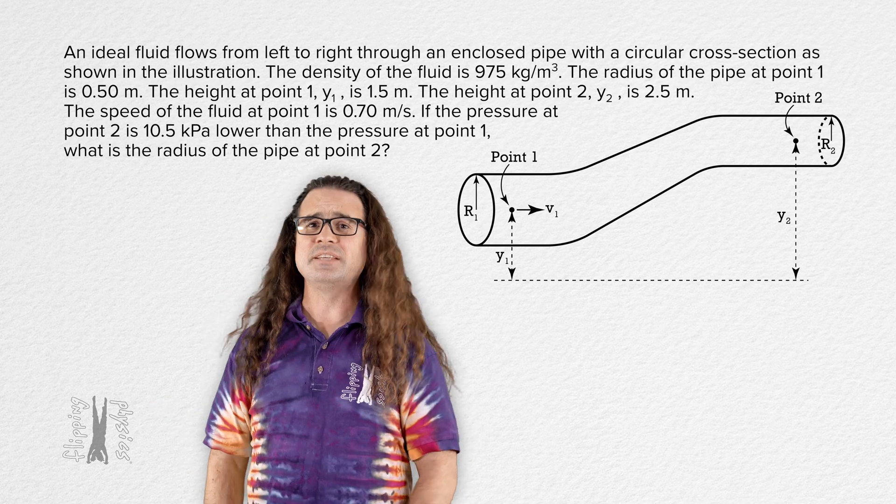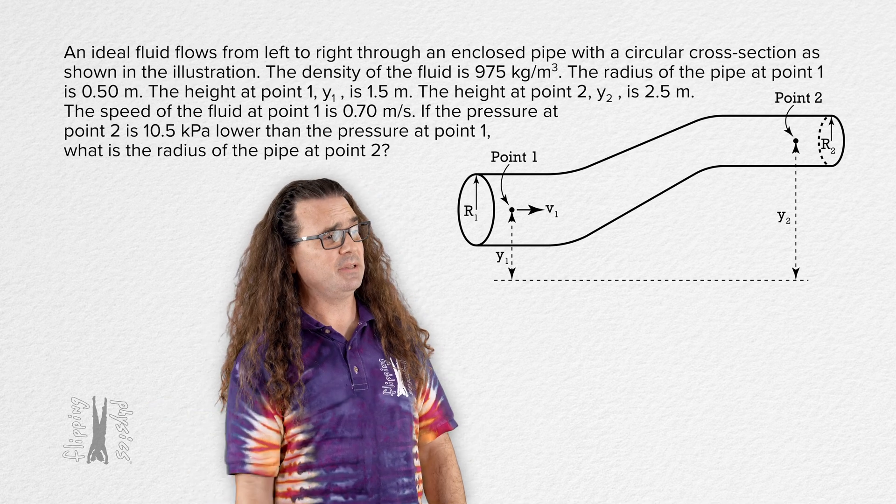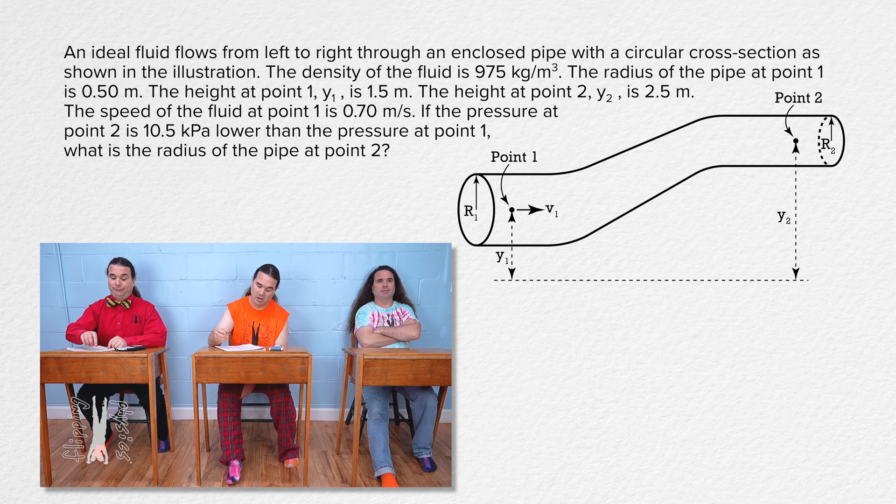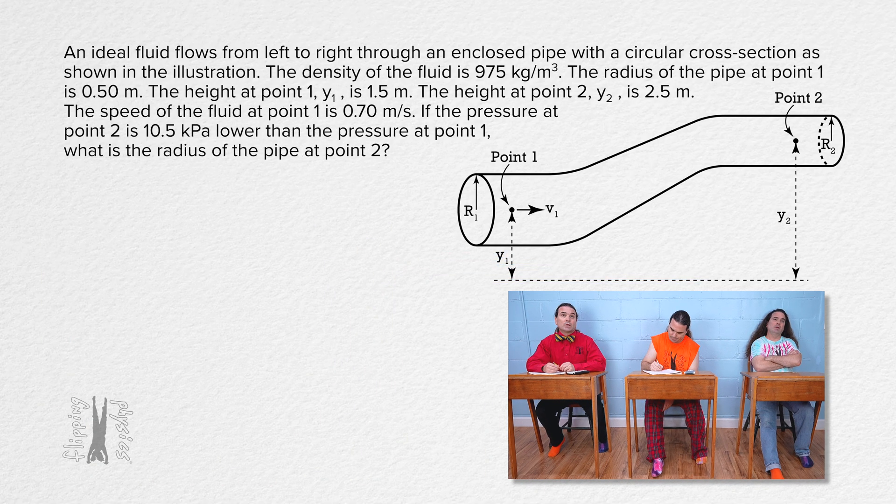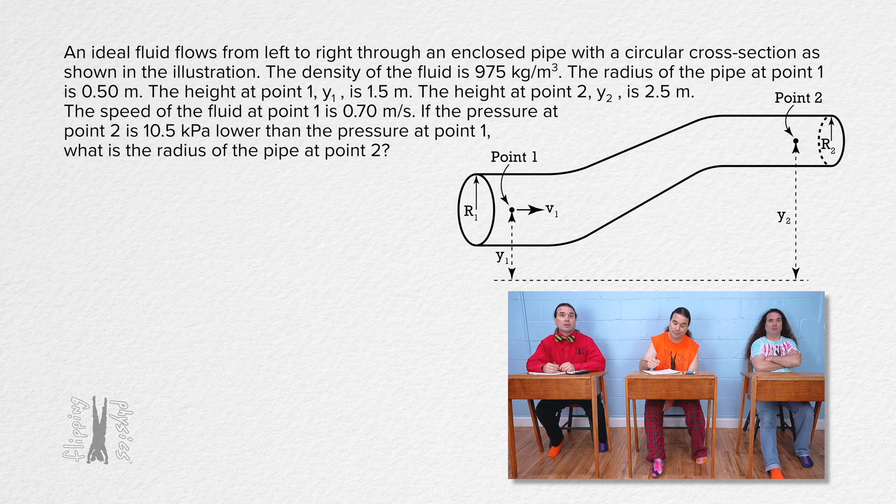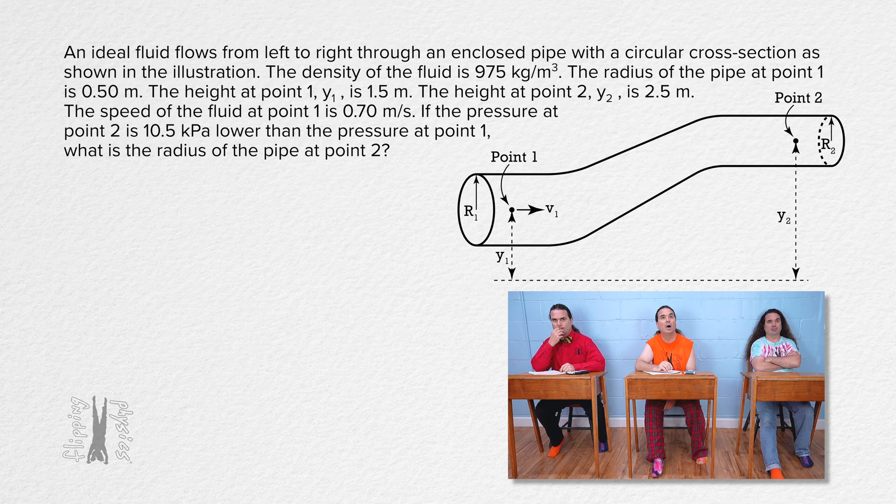Good morning. Bo, please read the problem, and Billy, please translate. Sure. Flippin' Physics. An ideal fluid flows from left to right through an enclosed pipe with a circular cross-section as shown in the illustration.